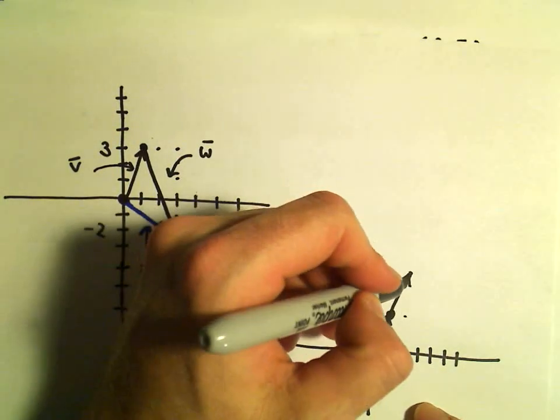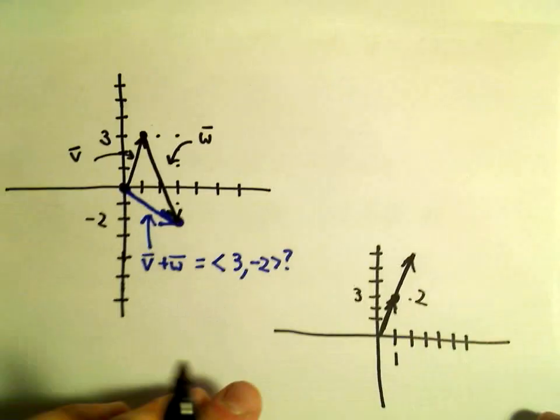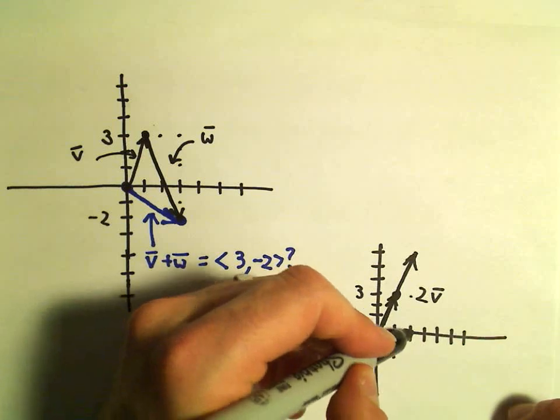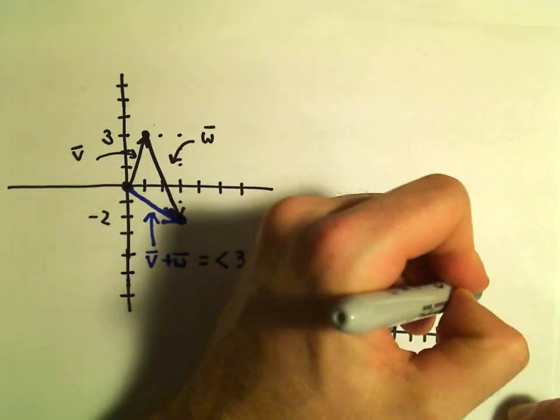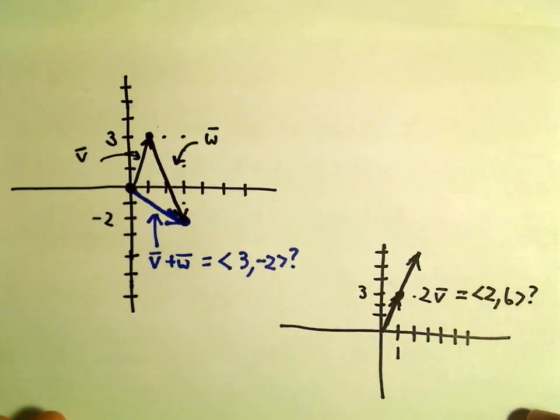So again, just kind of eyeballing this new vector, again, which we could call 2v, it looks like to me it has components, it looks like to me you're moving over 2 and up 6. So I'm thinking, well, this should have components of 2 comma 6.